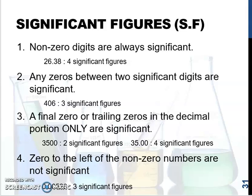There are several rules to determine how many significant figures are in a number. The first rule is that non-zero digits are always significant. For example, 26.38 — there are no zero digits in there, so this has four significant figures.